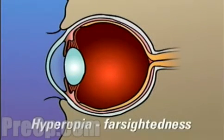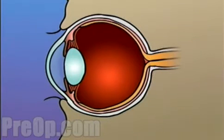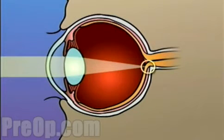Hyperopia, or farsightedness, occurs when the shape of the eye is too short. In this case, light rays are focused on a point behind the retina.